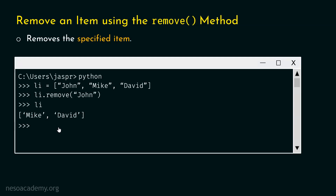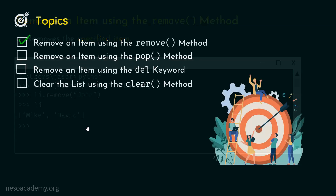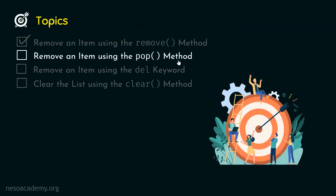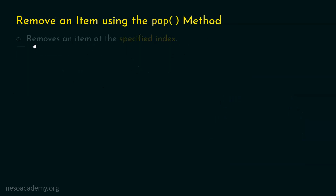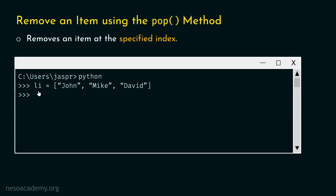Now let's move on to the next topic: removing an item using the pop method. The pop method is used to remove an item at the specified index. So instead of passing the item itself, we can pass the index of that item to the pop method in order to remove it. We will consider the same list with three items: john, mike, and david. Let's say we want to remove mike. We know the index of this item is one, so we type li dot pop one.